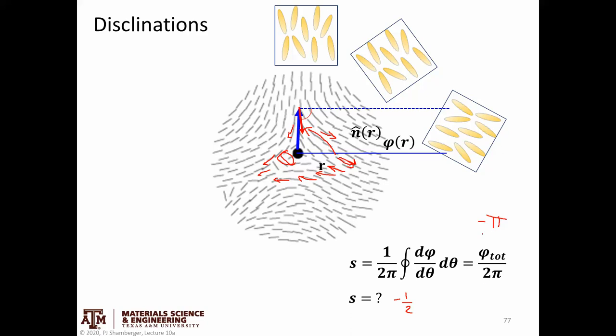Since the director rotates in the opposite direction from vector r, phi total is negative pi. That gives a disclination strength of negative one-half. The negative comes from the sense of rotation of the director being opposite to the sense of rotation of vector r. Disclination strengths can be positive or negative, and they can be integer values or half-integer values.